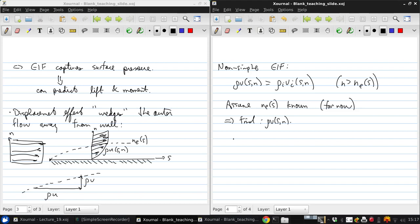So for n greater than n_E, ρV in the real viscous flow can be determined by integrating its n-direction gradient. So ρV of (s,n) is ρV at (s,0), so n equals 0, plus the integral from 0 to n, ∂/∂n (ρV) dn.